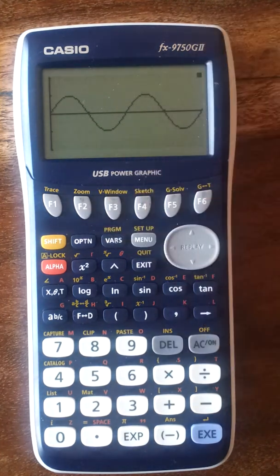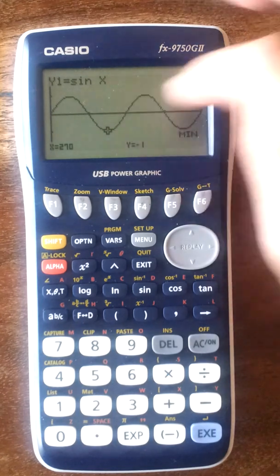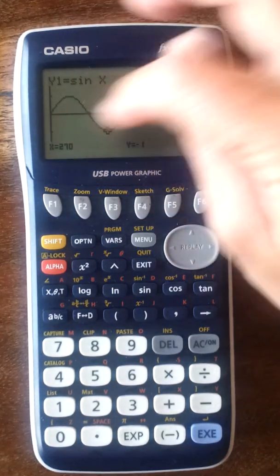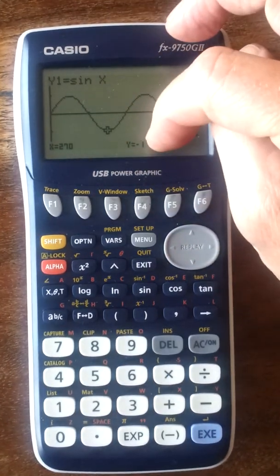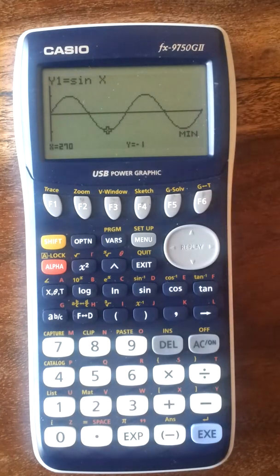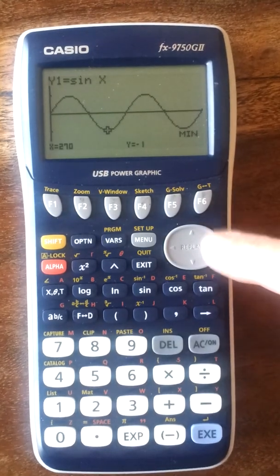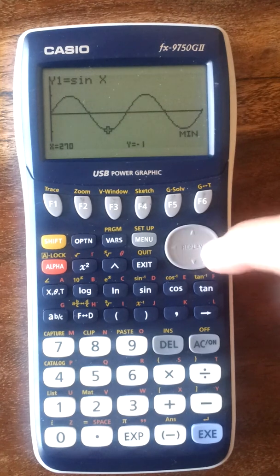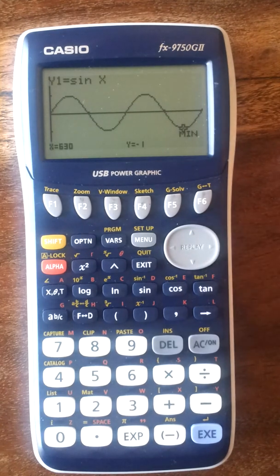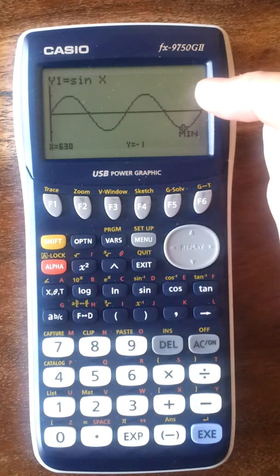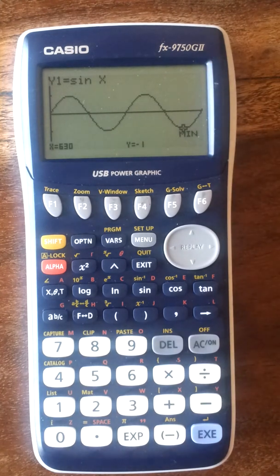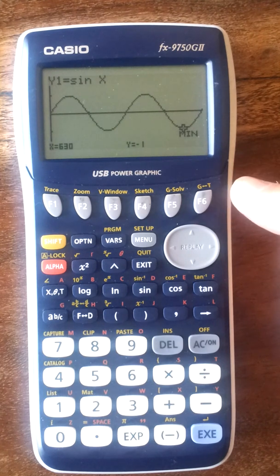G-solve for the minimum. That's the first minimum. It's got 270 for x, and y equals minus 1, or negative 1. Let's use the replay button to try and find this one here. That's it there. That one is on 630, and y equals negative 1.